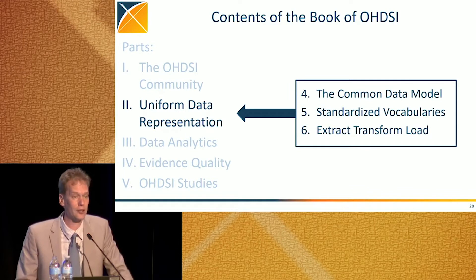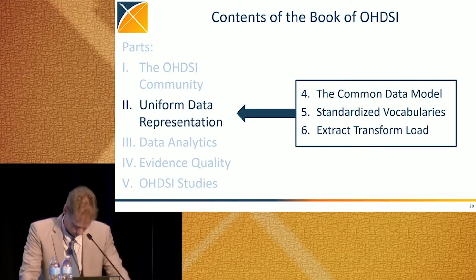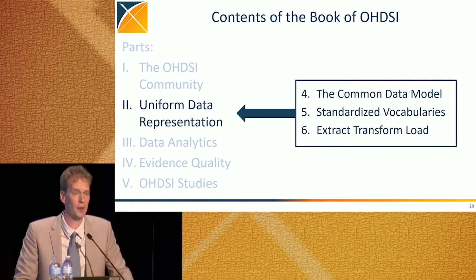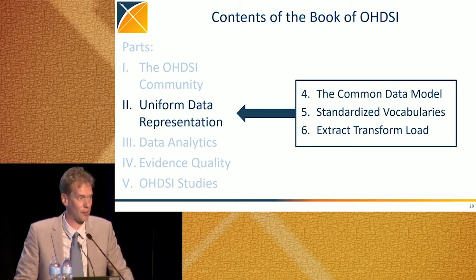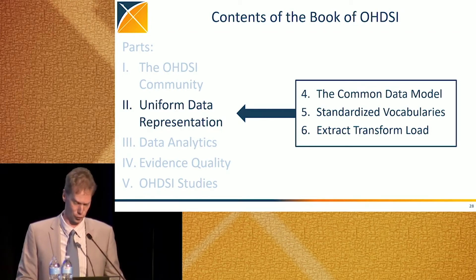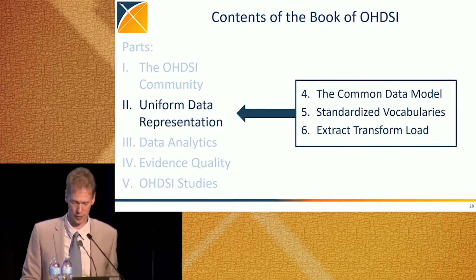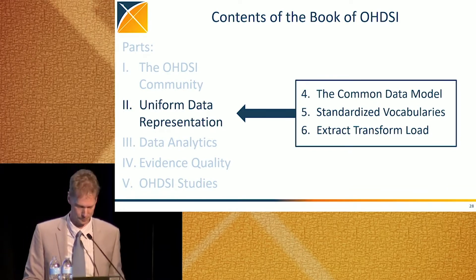Part two of the book is on uniform data representation. This goes into the common data model and the standardized vocabularies, and also talks about how one can do an extract, transform, load from your source data into the common data model.